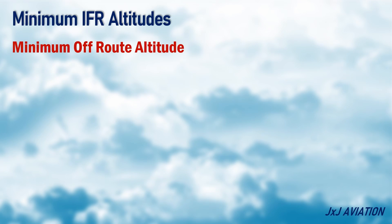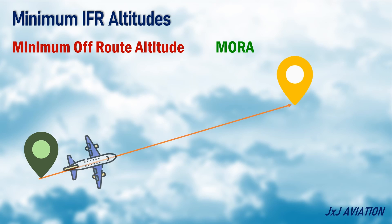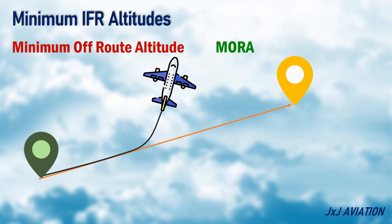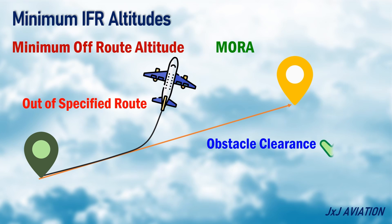Minimum Off-Route Altitude, MORA — this is the lowest altitude that an aircraft can fly at for IFR operations off a specified route. This ensures obstacle clearance but does not guarantee signal coverage for an aircraft that deviates from a particular route.